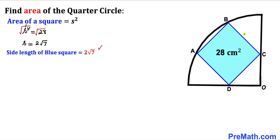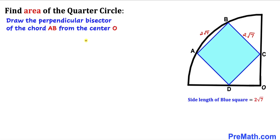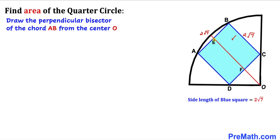So this side is 2√7, and likewise this side is 2√7. Now let's draw the perpendicular bisector of chord AB from the center O of the quarter circle. As you can see in the next diagram, point E is the midpoint of chord AB. Therefore line segment AE equals line segment EB. Since AB = 2√7, dividing in half gives AE = EB = √7.